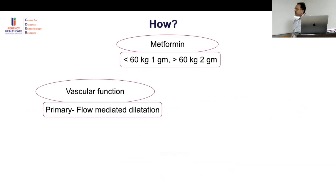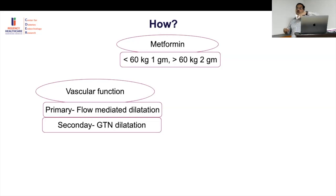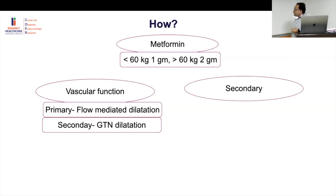Flow-mediated dilatation assesses vascular compliance: GTN, a nitrate, is given and the degree of dilatation measured — stiffer vessels respond less, more compliant vessels respond better. Doppler can also measure vessel wall speed: higher speed means more rigid, meaning less compliant. These are the vascular markers used as the primary outcome.